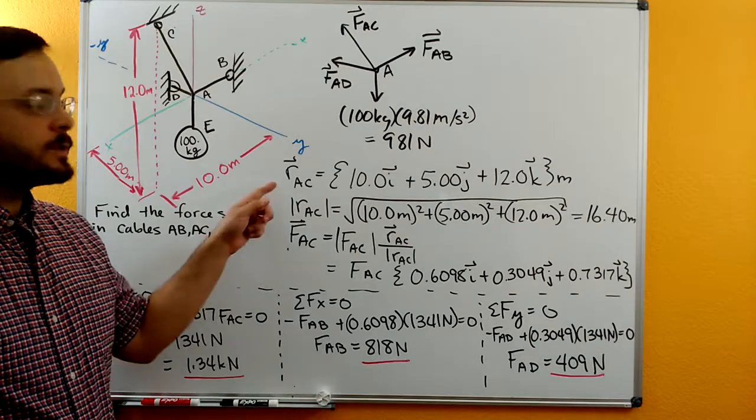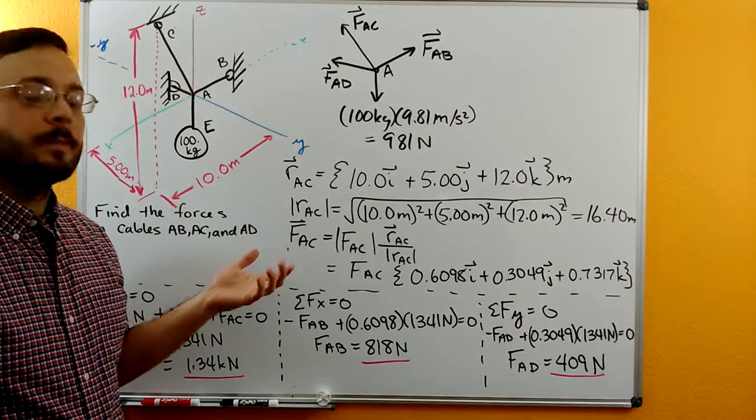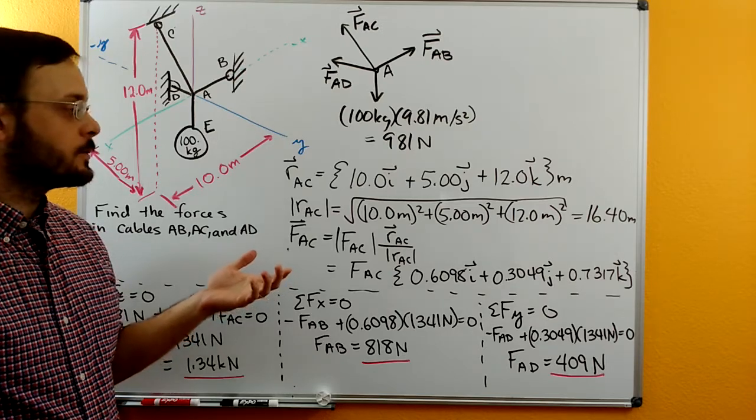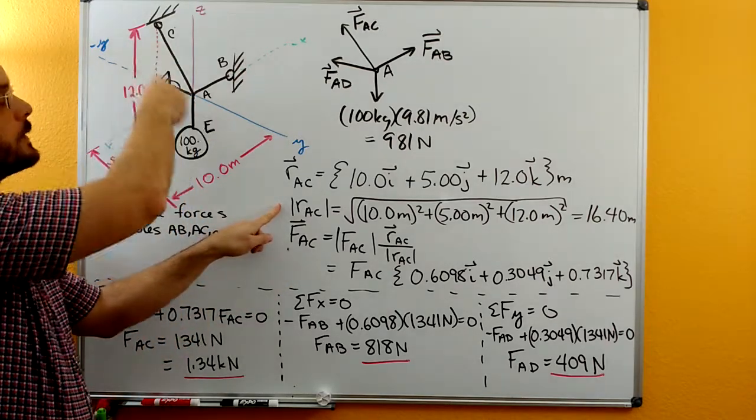This position vector has the right direction, but it has the wrong magnitude for a force vector. So we need to find its magnitude, this total length of the cable A to C.